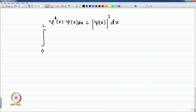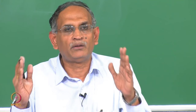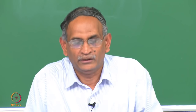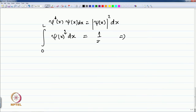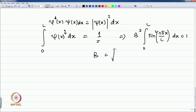If you integrate the total probabilities, since the particle must be somewhere inside the box: integral from 0 to L of |psi(x)|² dx = 1. This gives B² · integral from 0 to L of sin²(nπx/L) dx = 1, which yields B = √(2/L). Therefore the normalized wave function is psi(x) = √(2/L) · sin(nπx/L).